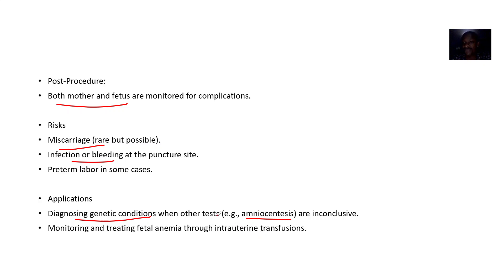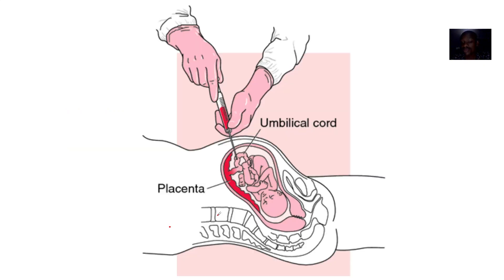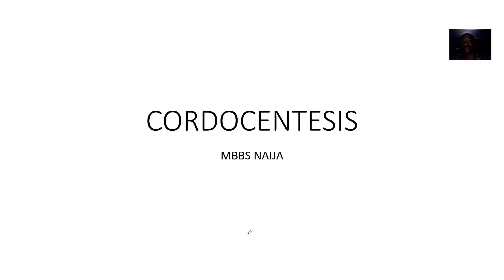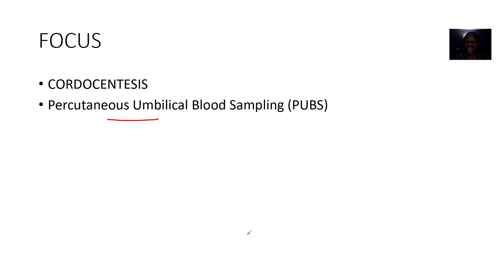Blood is tapped from the umbilical vein because the umbilical vein transports oxygenated blood. Sometimes you also want to monitor and treat fetal anemia through intrauterine transfusions. That covers cordocentesis, also known as percutaneous umbilical blood sampling.